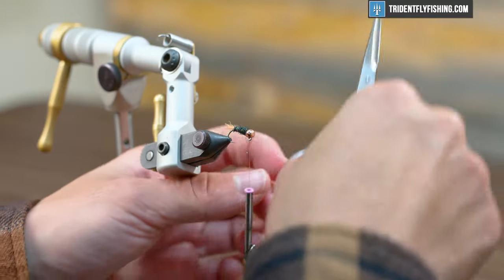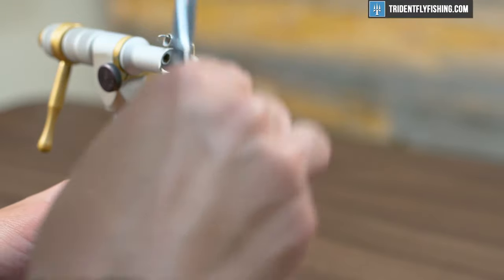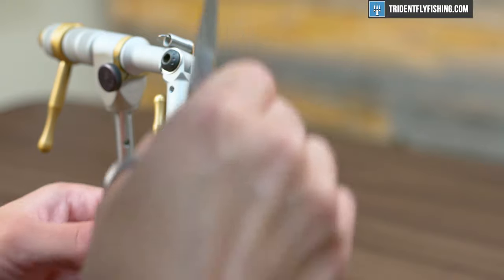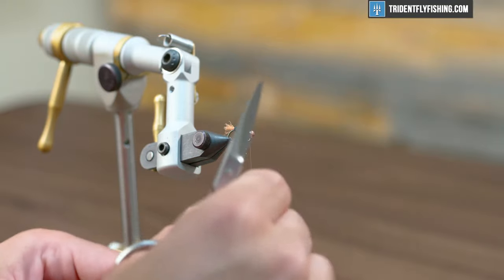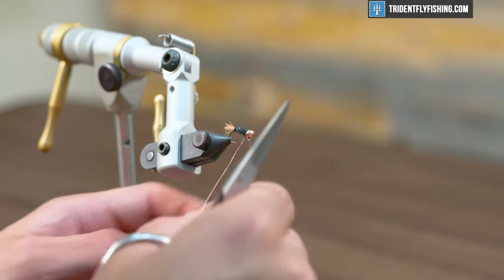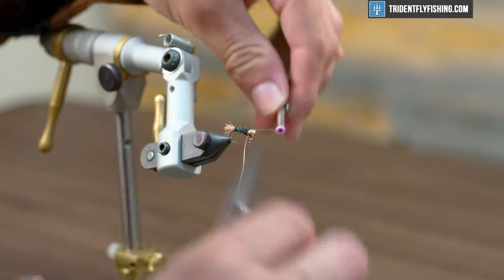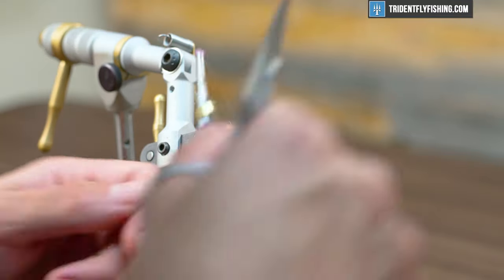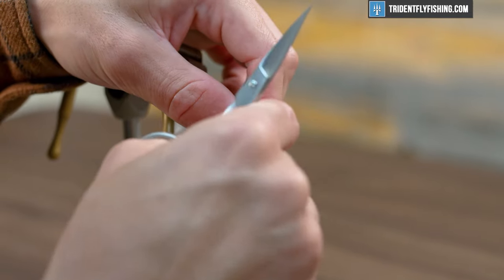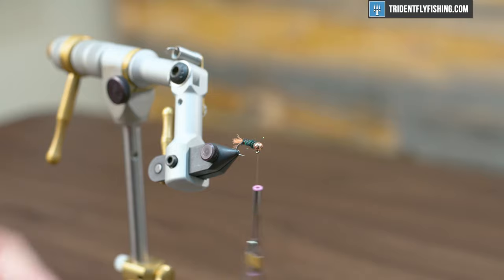Now we're just going to wind it with some of that ultra wire. You can use flashaboo if you want a little extra flash. But with this ice dub it's already plenty flashy and I like the segmentation and durability you get out of the wire. Just my personal preference. Save your scissors trauma and pop that off.